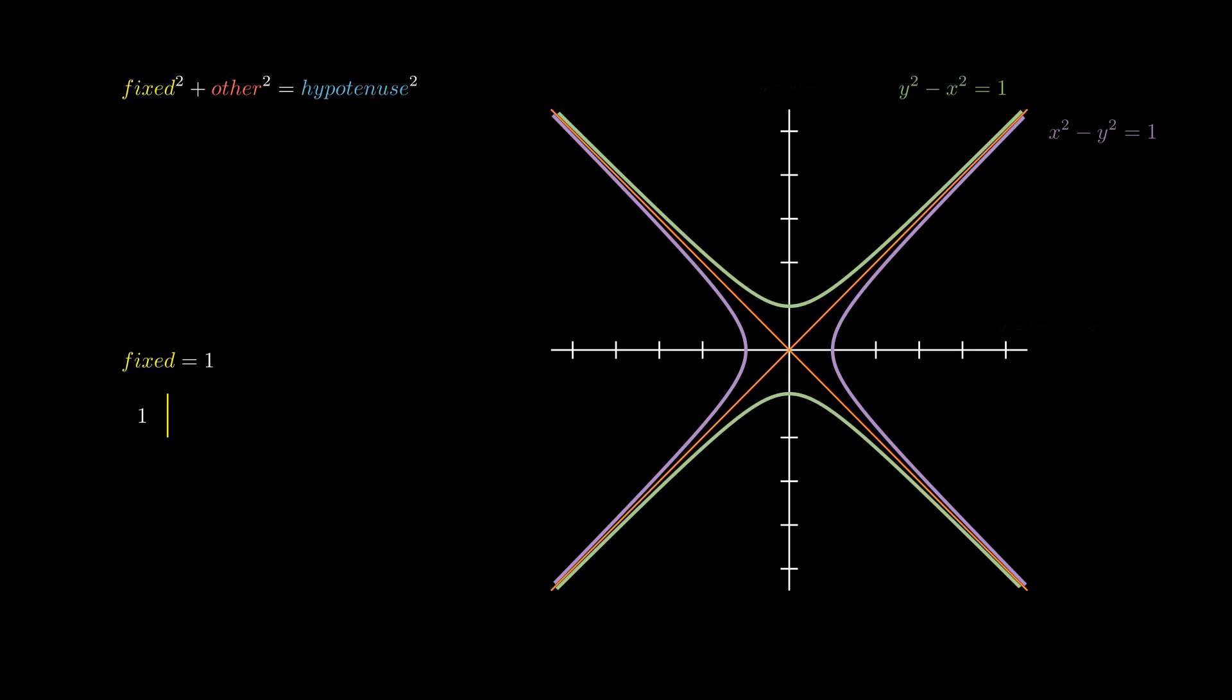These two hyperbolas result from having a fixed leg of 1, but what if we change it to a different value? Perhaps 2? Or 3?